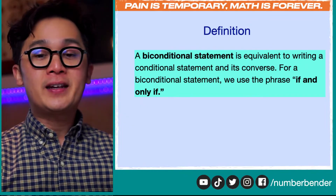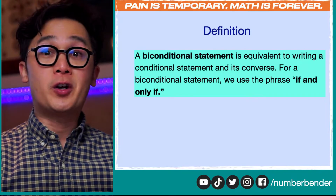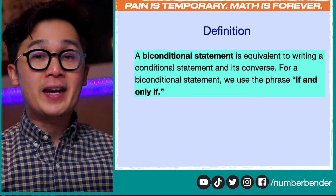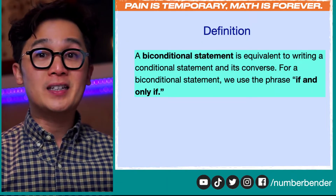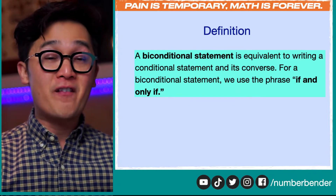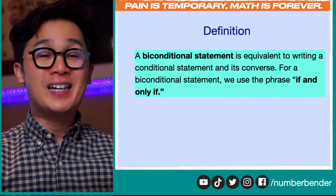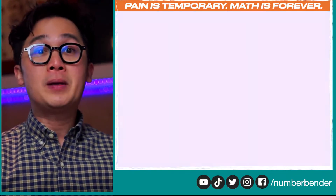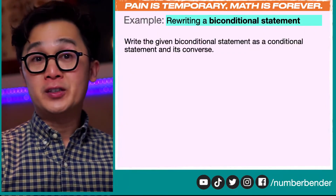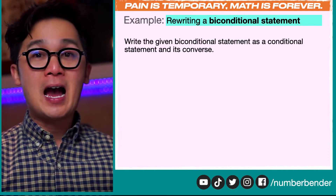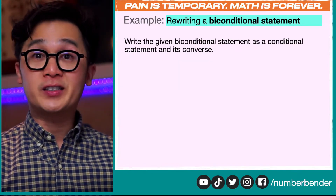Just like in any mathematical idea, operations are important, and in a biconditional statement, the operation we're going to be using is the 'if and only if' verbal operation. We can also use its symbol form that we're going to be working on today. The first thing we need to understand is how to rewrite or write our biconditional statement.